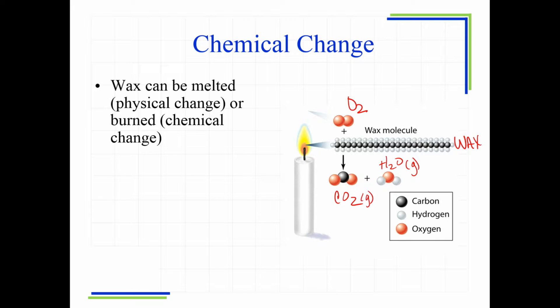It can melt. That would just be a physical change. So you could melt wax and maybe some wax might drip down on this candle. It's just melting from the heat. That is just physical because it can re-solidify and still be wax. But if it undergoes what we see depicted here, then that's the chemical change, okay?